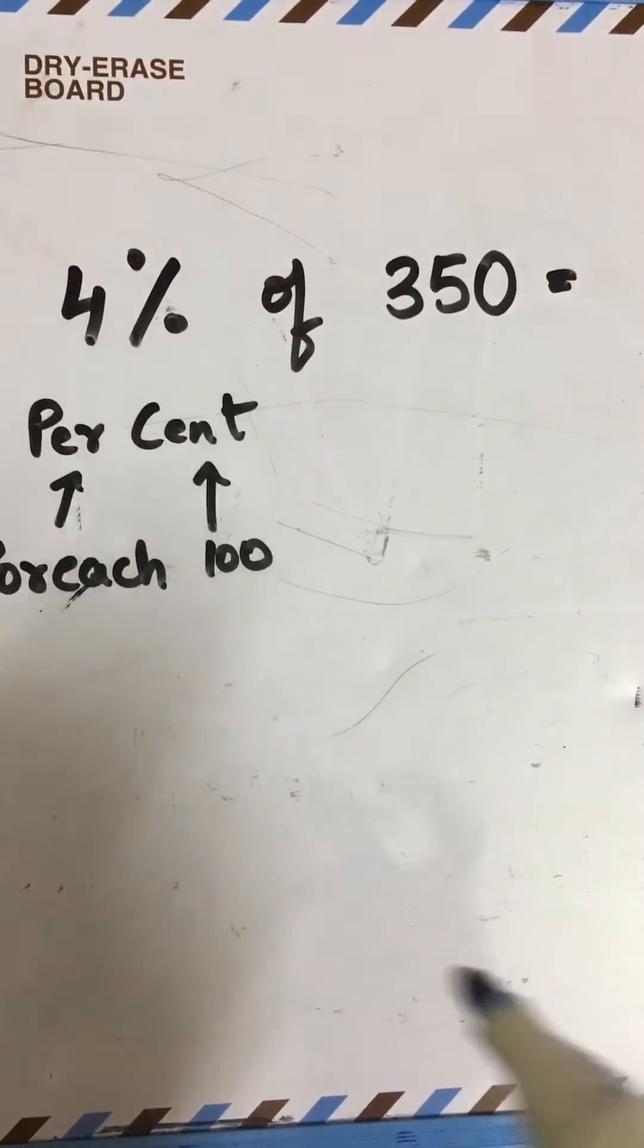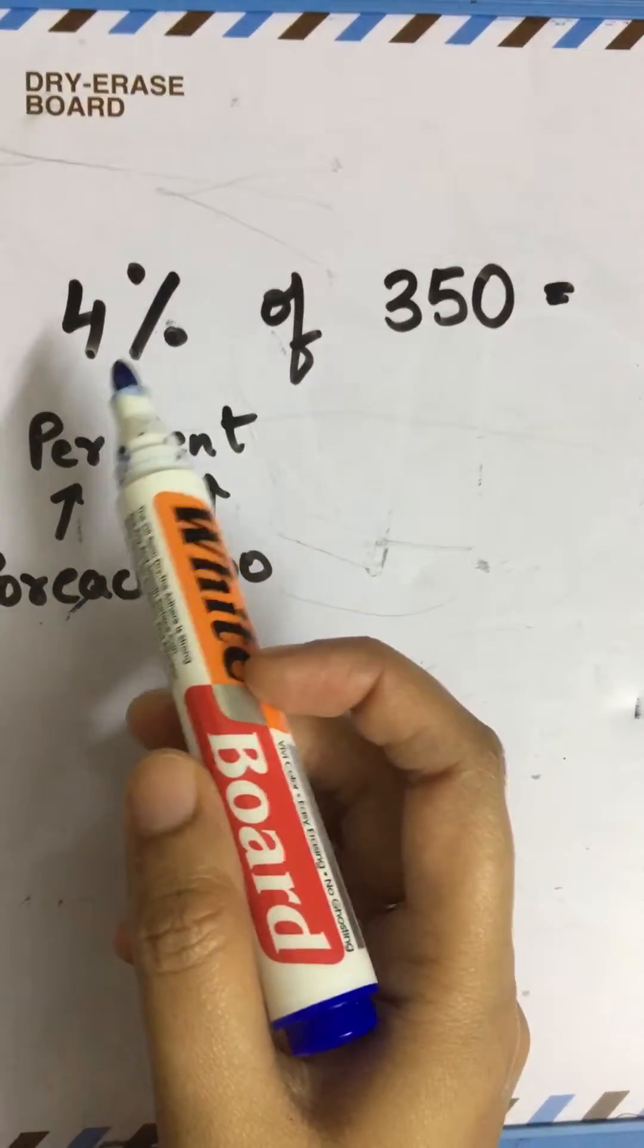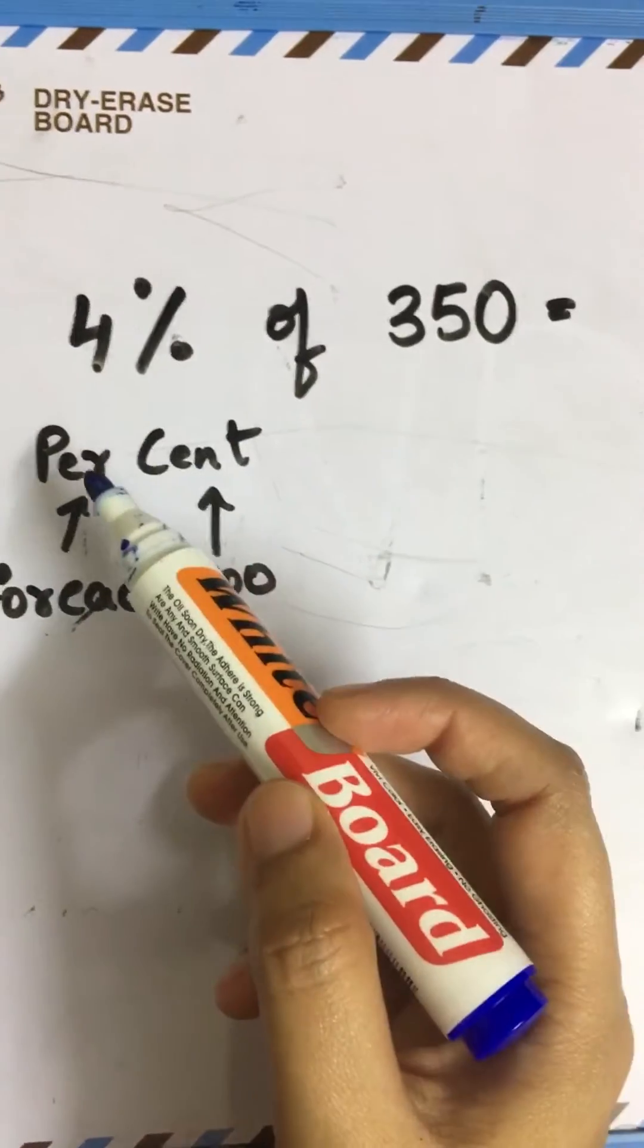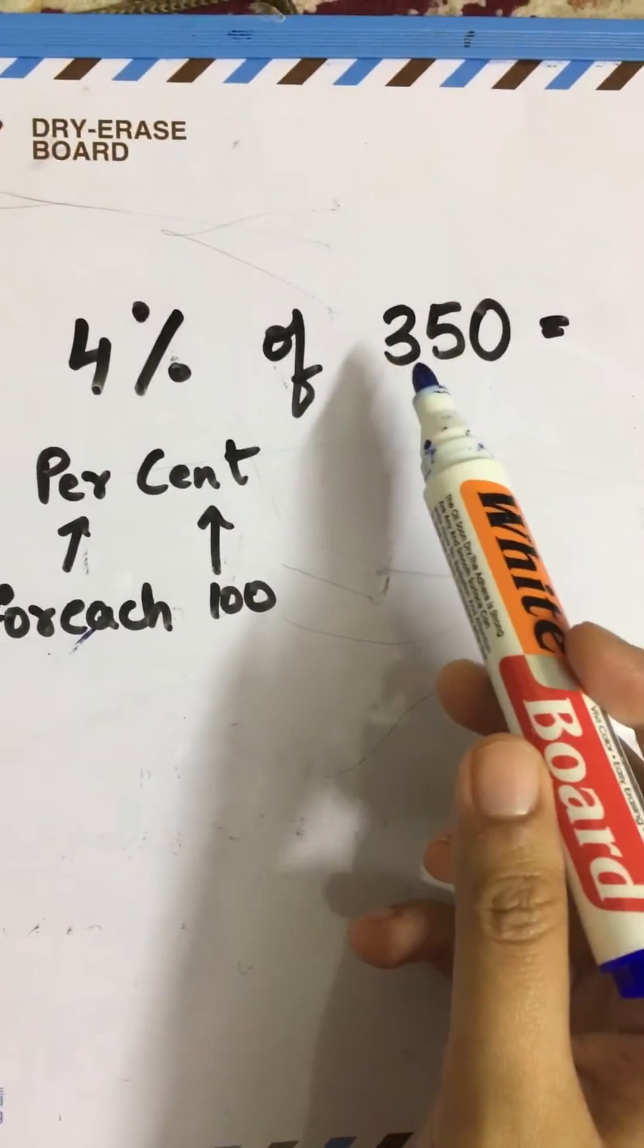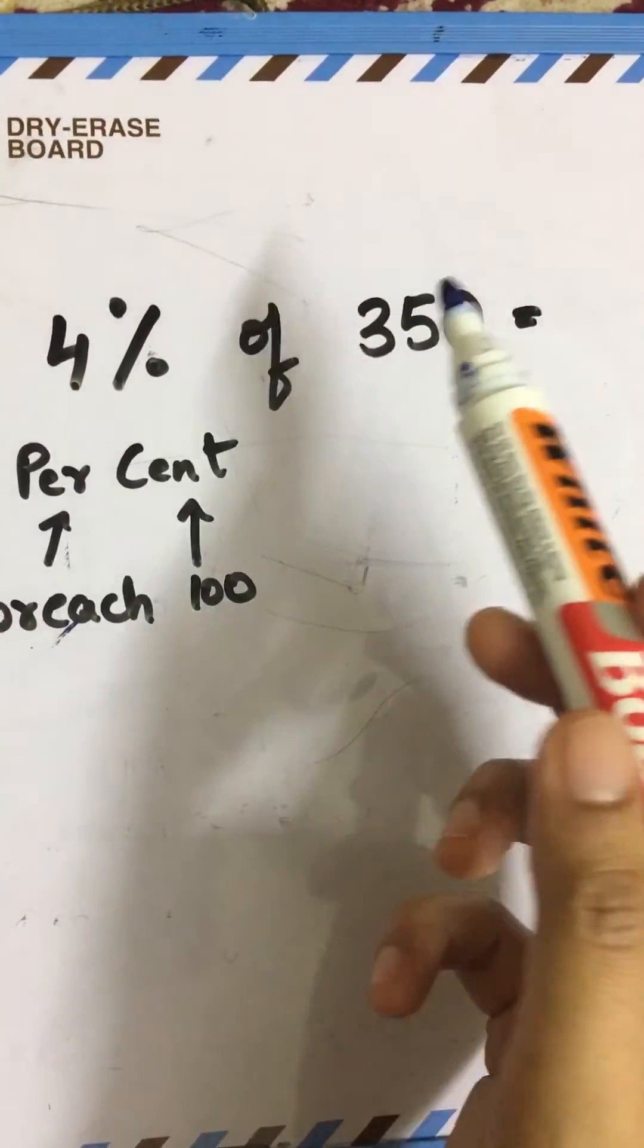Let's calculate quick percentages part 2. We are going to find 4% of 350. Percent means for each hundred, so how many hundreds do we have? Three hundreds, it can be four hundreds or anything.